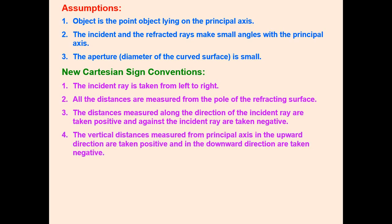Vertical distances measured from the principal axis in the upward direction are taken as positive, and in the downward direction as negative.